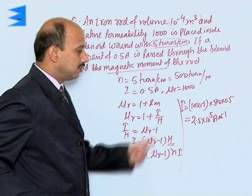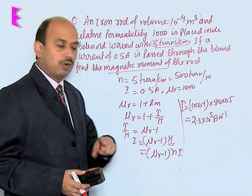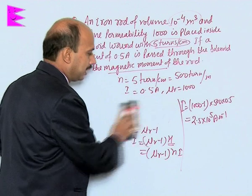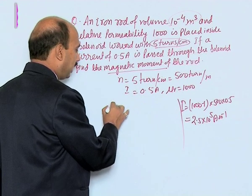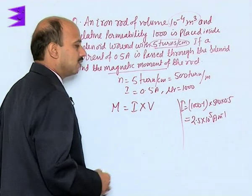Now, after this, I is the magnetic dipole moment per unit volume. So we can get the total magnetic dipole moment, and that will be magnetic dipole moment M is equal to I into V, that is the volume.